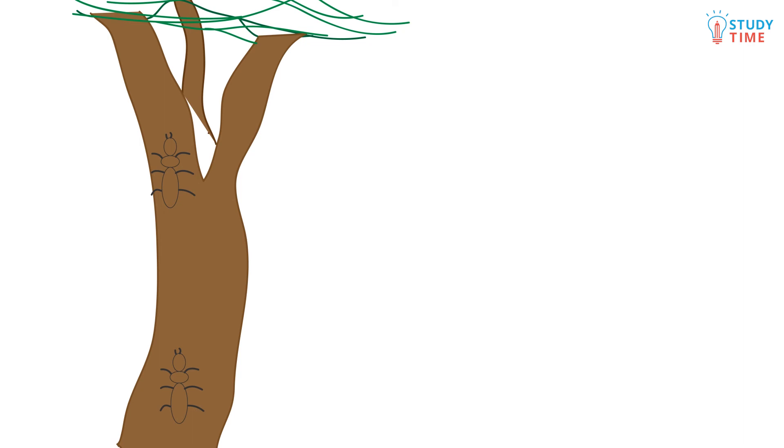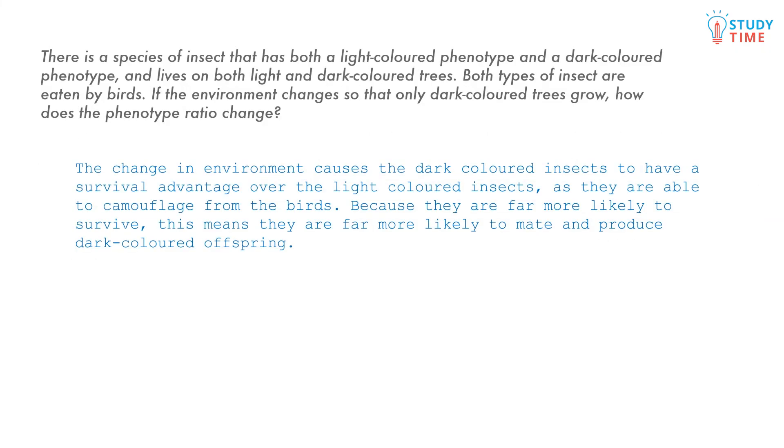Let's word the answer carefully. We might write it like this. The change in environment causes the dark coloured insects to have a survival advantage over the light coloured insects, as they are able to camouflage from the birds. Because they are far more likely to survive, this means they are far more likely to mate and produce dark coloured offspring.